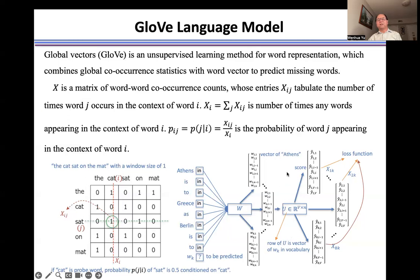And then we calculate the inner product of each vector of the input word and this matrix U to generate a score distribution. We use the score distribution and the global statistics to define the loss function, using the loss function to train the GloVe language model to make sure this score is consistent with the global statistics.